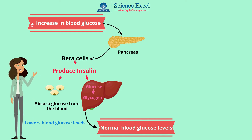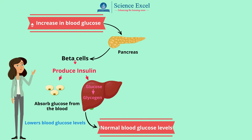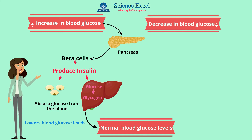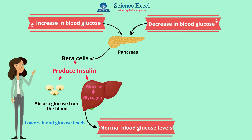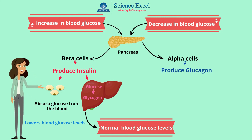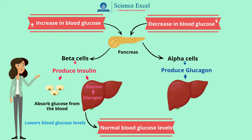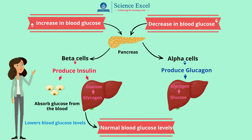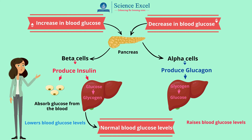Now let us understand how glucagon works. Glucagon works to counterbalance the actions of insulin. About 4-6 hours after we consume food, the glucose levels in our blood decrease, triggering the pancreas — which have another type of cells called alpha cells — to produce a hormone called glucagon. Glucagon signals our liver to break down the stored glycogen back into glucose. These liver cells then release the glucose into the bloodstream, raising the glucose level in the blood.